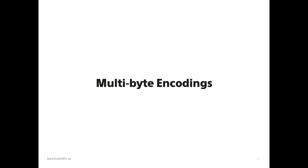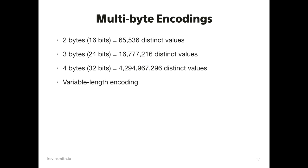A multibyte encoding literally just means rather than one byte to determine a character, we're going to use some combination of two bytes, or three bytes, or four bytes. When you do that, you've got a greater number of possibilities. With two bytes, you've got over 65,000. Three bytes, over 16 million. Four bytes, over four trillion possibilities — and that doesn't even get into variable-length encodings.